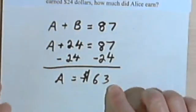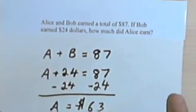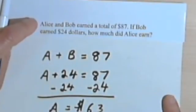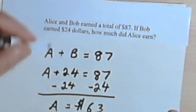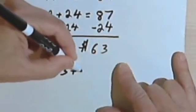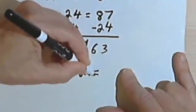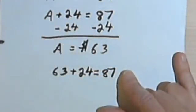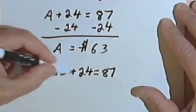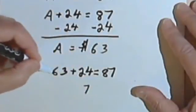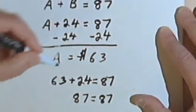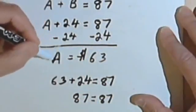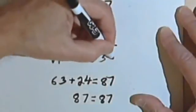And I can check this. Let's see. Alice and Bob earned a total of $87. So Alice earned $63 and Bob earned $24. So 63 plus 24 should equal 87. Adding these together, the 3 plus the 4 is going to give me a 7, 6 plus 2 will give me an 8. 87 equals 87. So my answer checked, Alice earned $63.